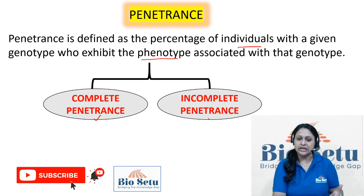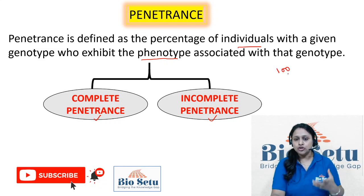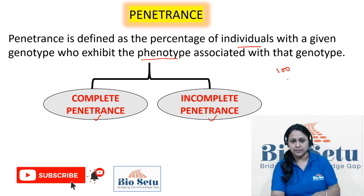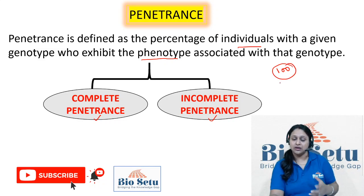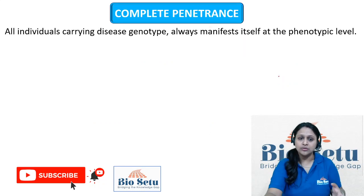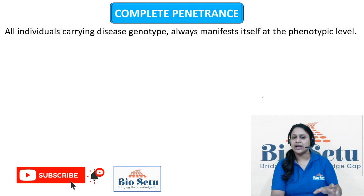There are two types of penetrance: complete penetrance and incomplete penetrance. Complete penetrance, in simple terms, means that if an individual has some specific genotype, the expression of the same type is also shown — that is complete penetrance. But if out of 100 individuals with a genotype, only 90, 80, or 70 percent are showing the expression, that means it is an incomplete penetrable genetic expression. Complete penetrance means all individuals carrying the genotype will manifest the same phenotype.